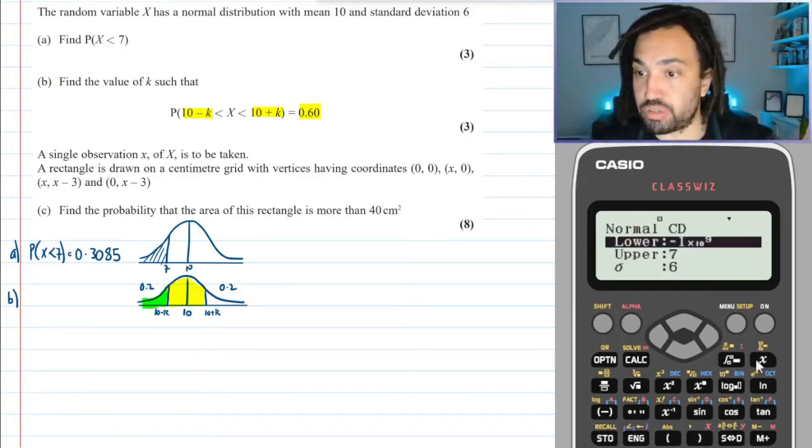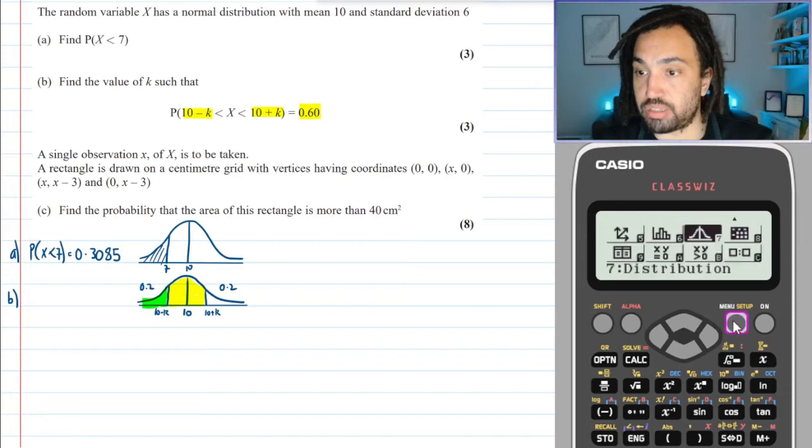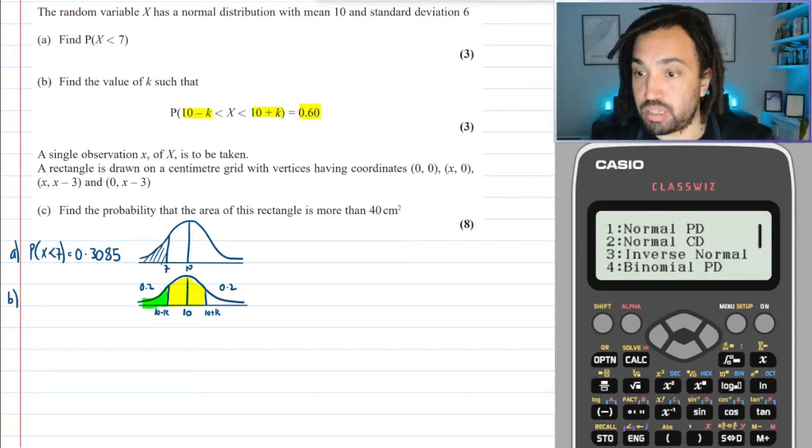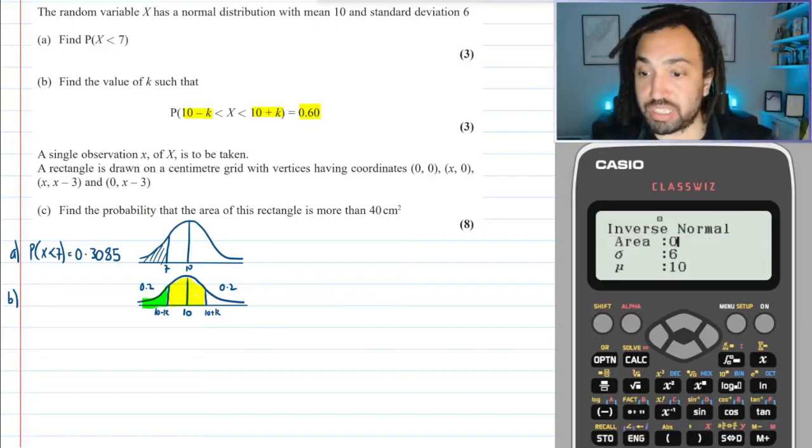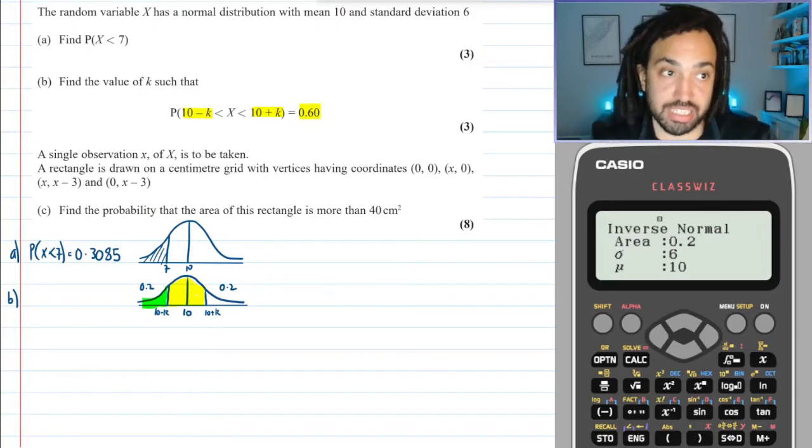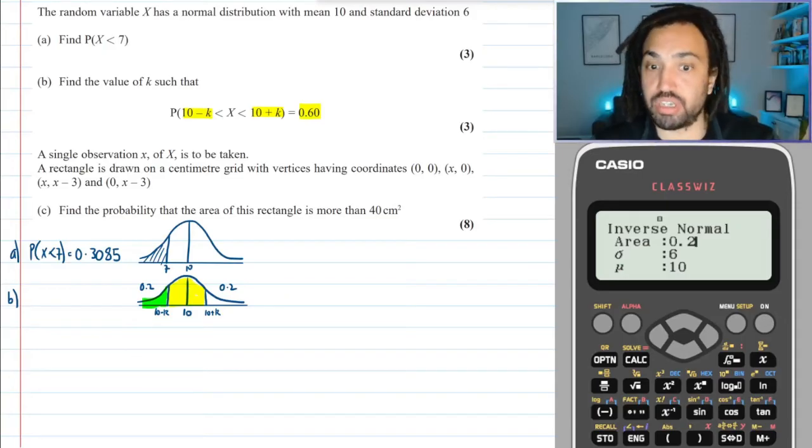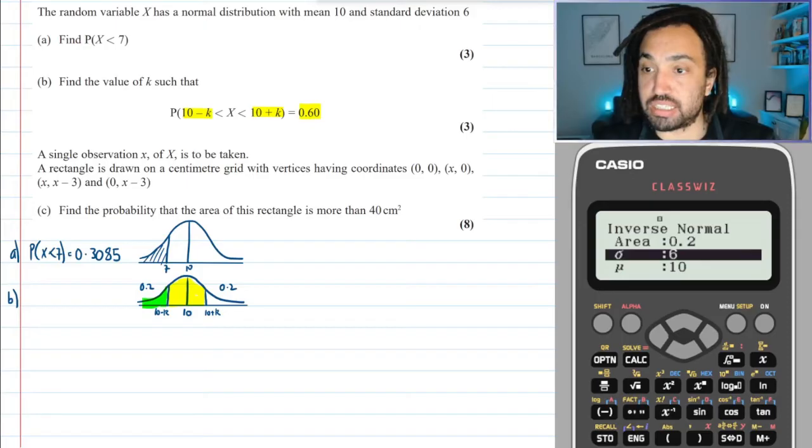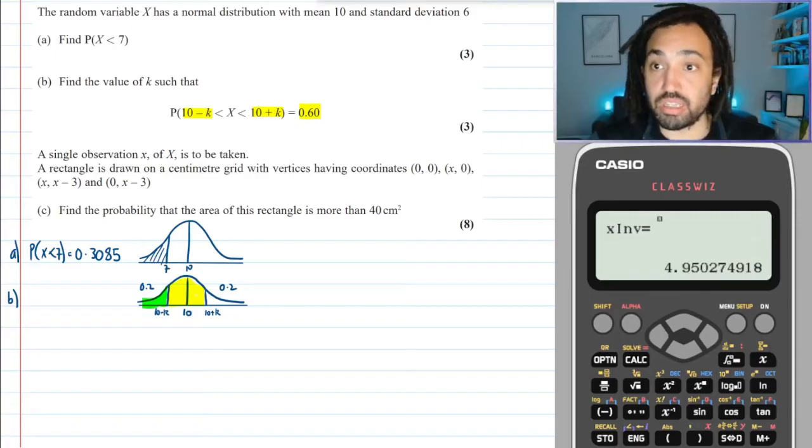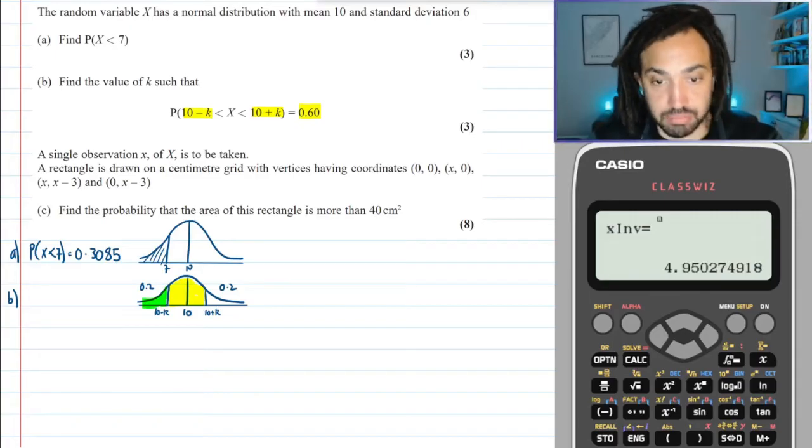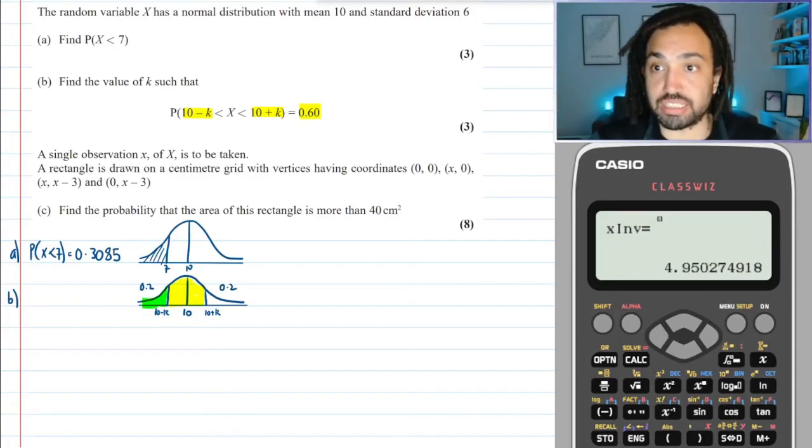So I'm going to go into inverse normal this time, and I want an area of 20 percent. Remember that the area is always less than, so it's always to the left. I want the mean and the standard deviation to be the same, so I press equals and that is my value.